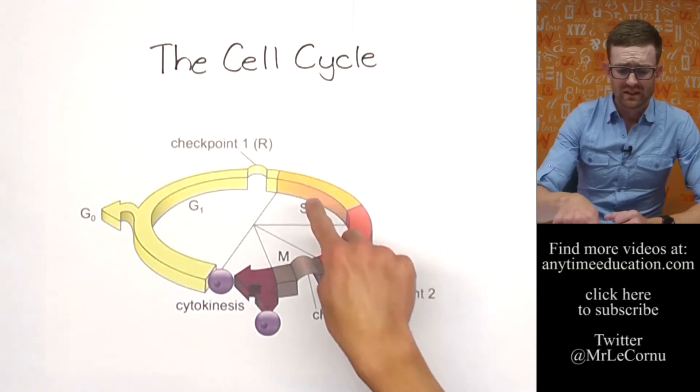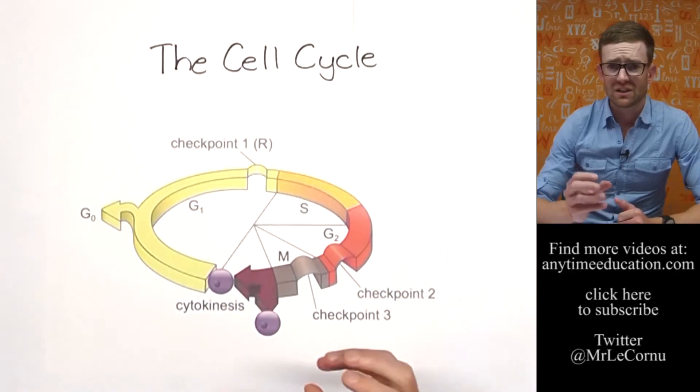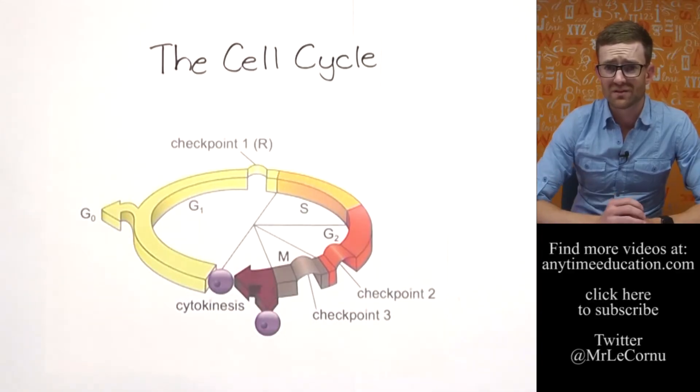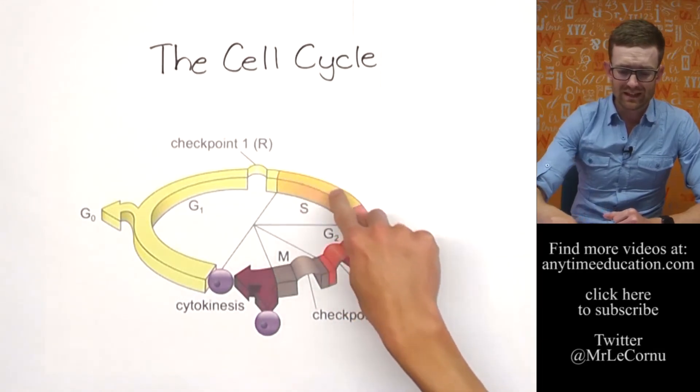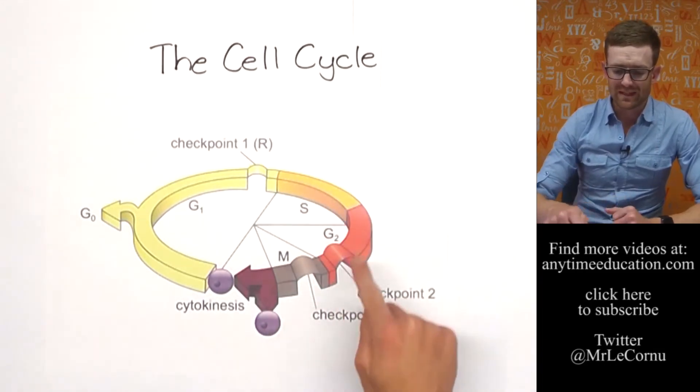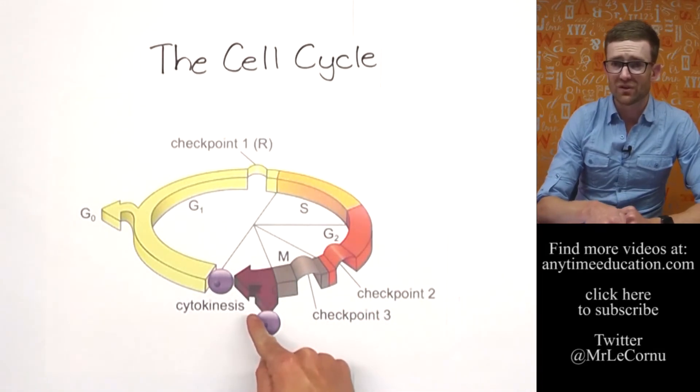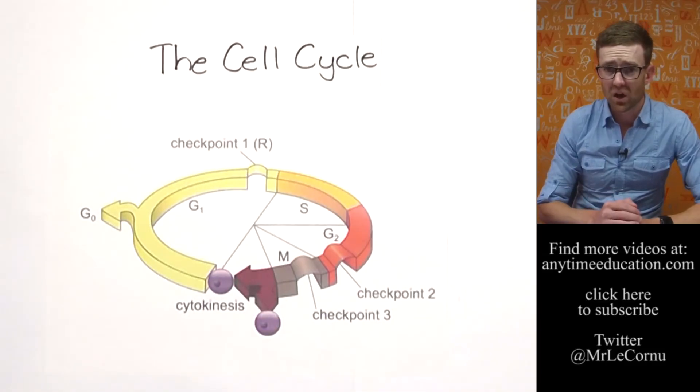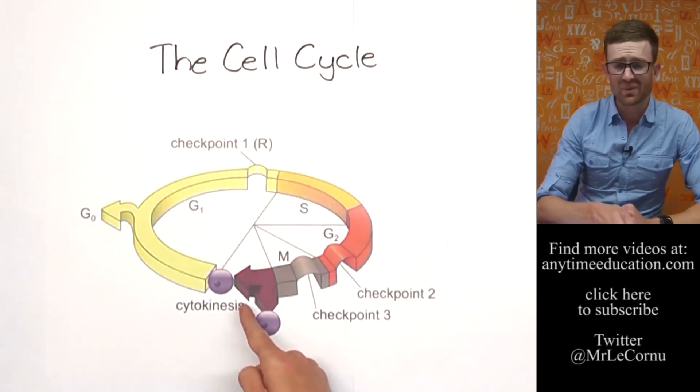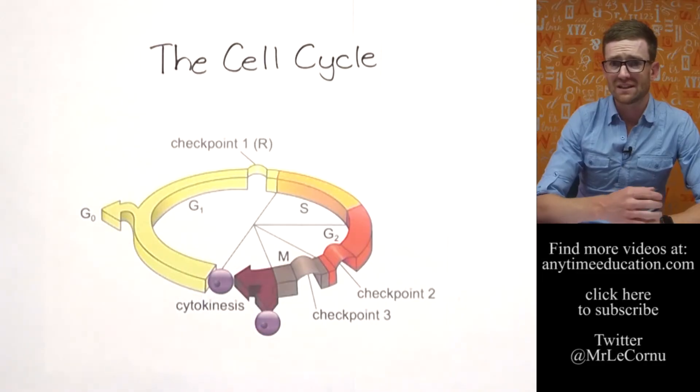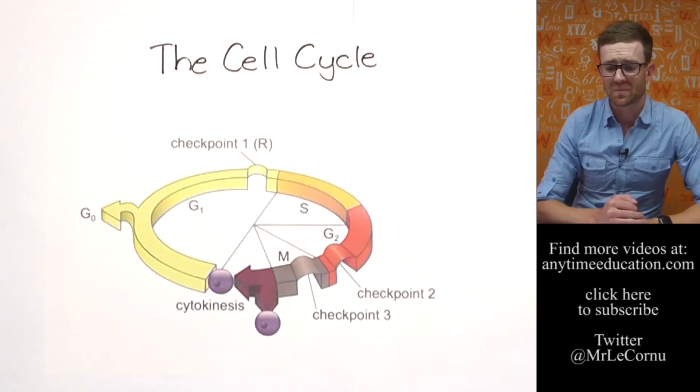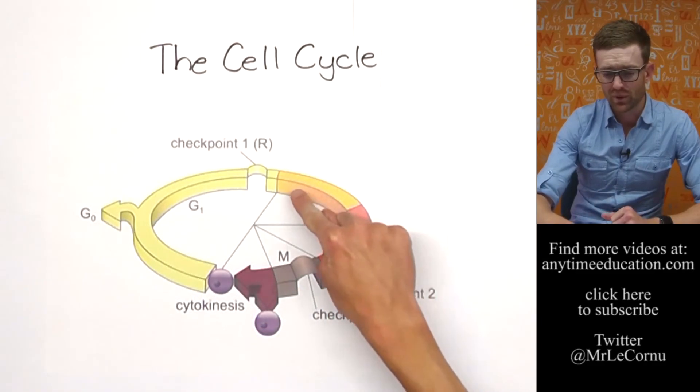In the S phase, synthesis is taking place. In the synthesis stage, the really important process of DNA replication takes place - DNA gets copied. The reason for that is because eventually the cell's going to divide again and there needs to be copies of the DNA so that when we get to that division, identical copies can be passed on.